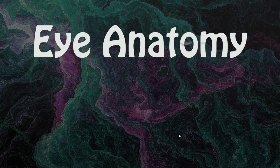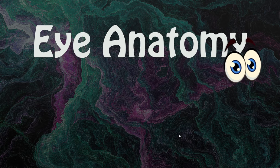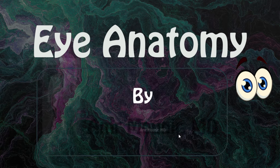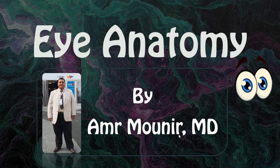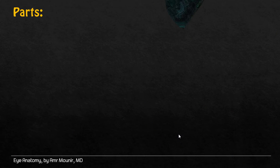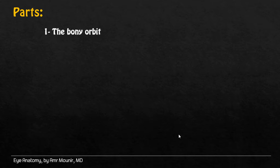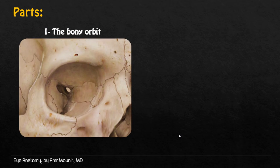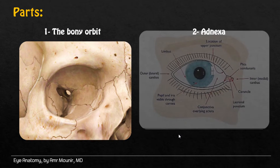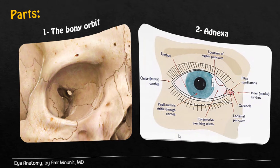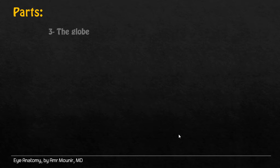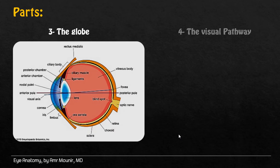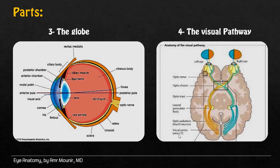Hi everybody, today we will speak about eye anatomy. Parts of the eye include the pony orbit, the adenexia, the globe, and the visual pathway.